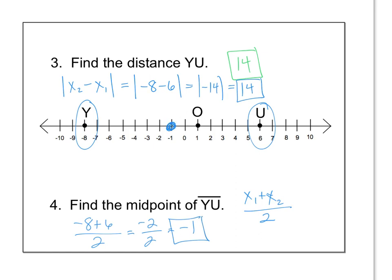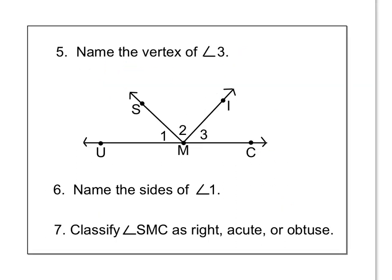Does this look like the middle between y and u? Yeah, it does, because this is 1, 2, 3, 4, 5, 6, 7. 1, 2, 3, 4, 5, 6, 7. Yeah, I had to go 7 little tick marks from each end to get to that point at negative 1. Please pause the video and try numbers 5, 6, and 7.